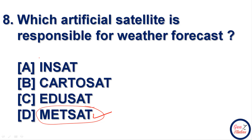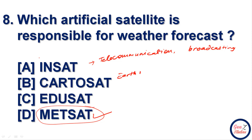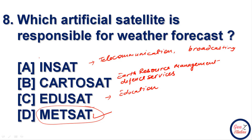INSAT is used for telecommunication and broadcasting. CARTOSAT works on remote sensing and is used for earth resource management, and is also used in defense services monitoring. EDUSAT is the first satellite fully designed for education — it enables two-way communication and is used for distance education purposes. METSAT is used for weather forecasting.